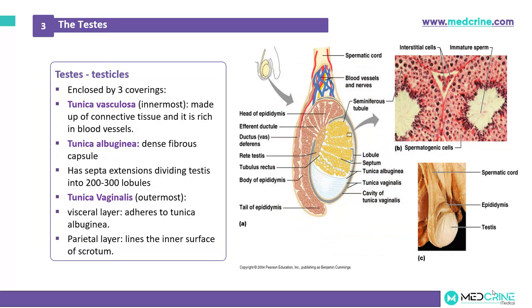The testicles are covered in three layers. The innermost layer is the tunica vasculosa, which is made up of connective tissue and is rich in blood vessels. The second layer is the tunica albuginea, a dense fibrous capsule with septa extensions that divide the testes into 200–300 lobules. The outermost layer is the tunica vaginalis, which has a visceral layer adhering to the tunica albuginea and a parietal layer lying on the inner surface of the scrotum.